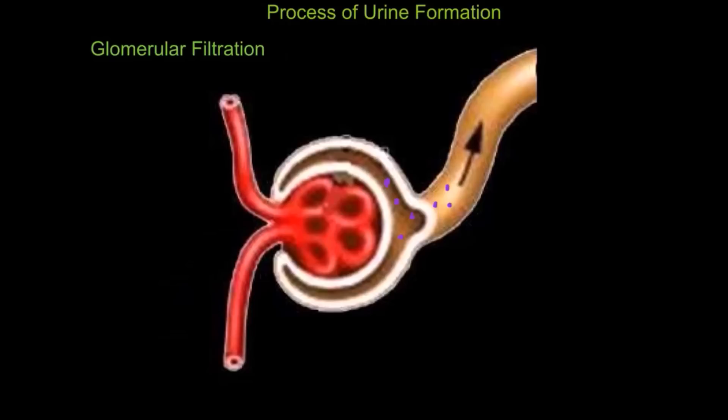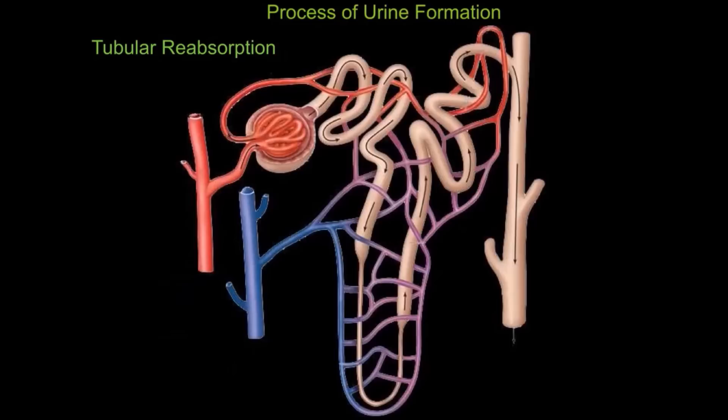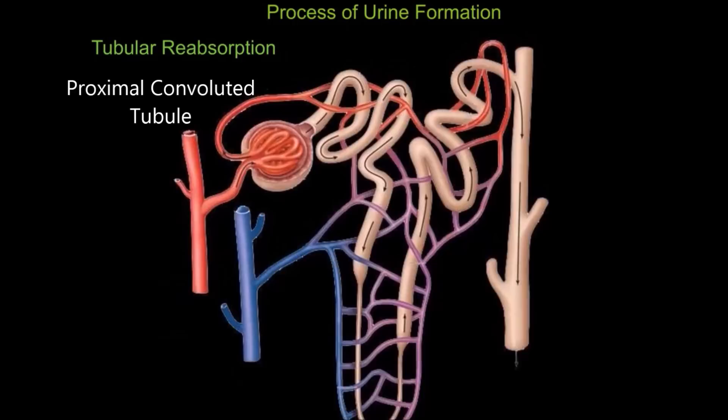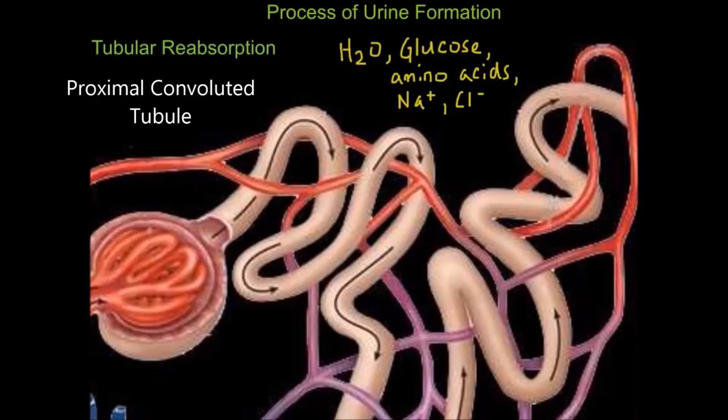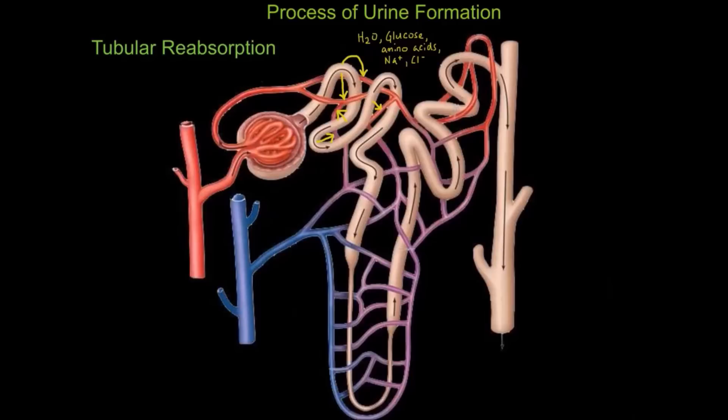The filtrate will move through the kidney tubules, and depending on the body's needs, these substances can be reabsorbed or added to, to be eliminated as waste. After Bowman's capsule, the filtrate moves into the proximal convoluted tubule, where substances such as water, glucose, amino acids, and ions such as sodium and chloride are reabsorbed back into the body via the peritubular capillaries.